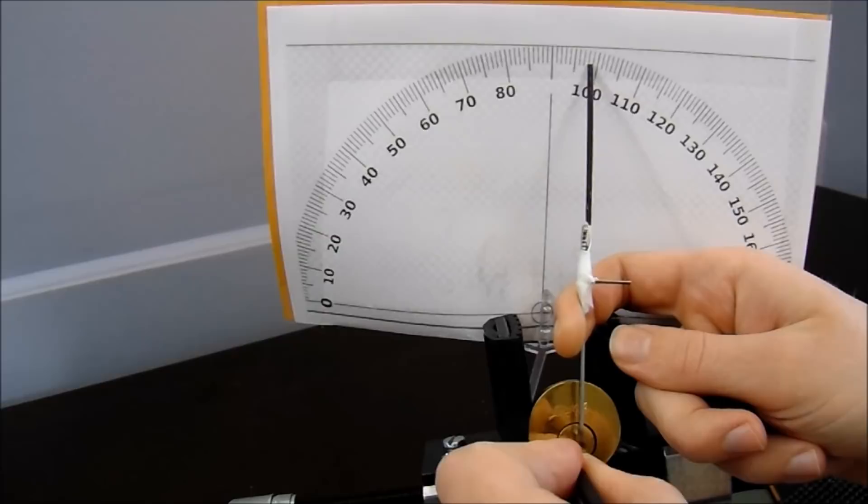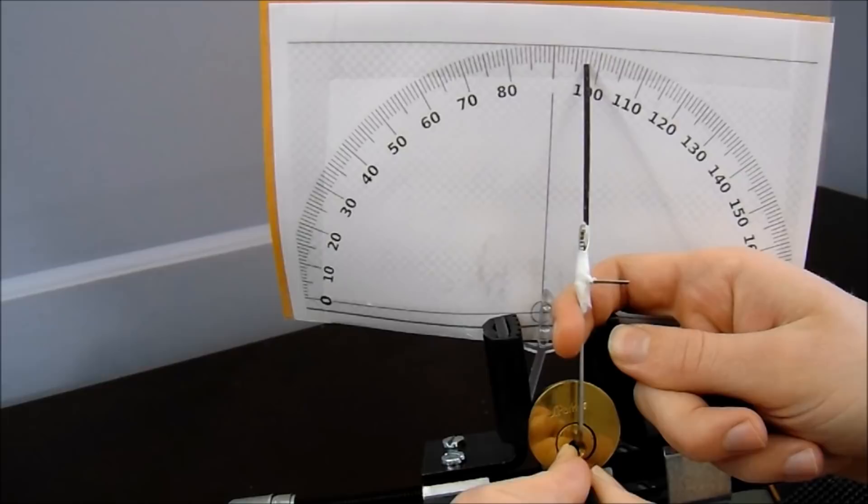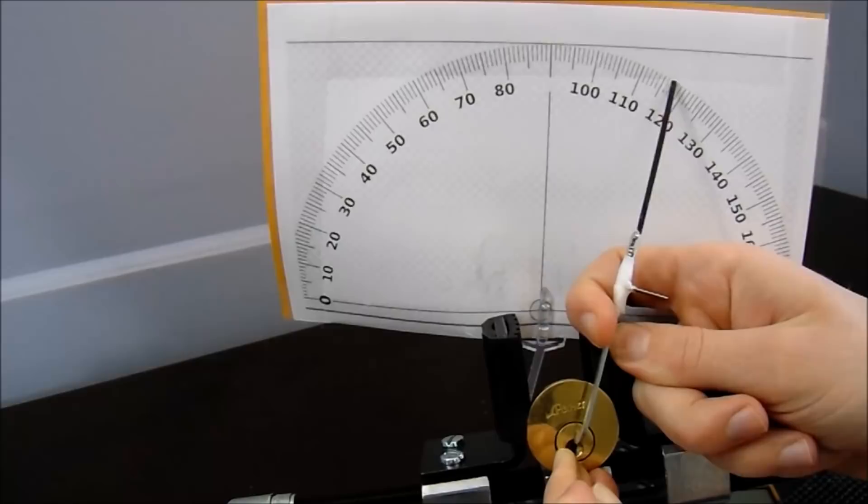3, you can start to see it counter-rotating there. So we're going to just lift it, keep some tension against it, and the lock has now opened.